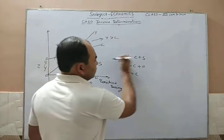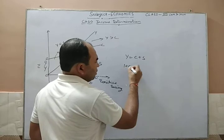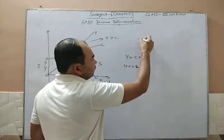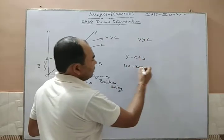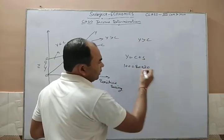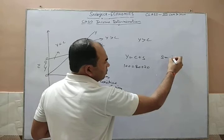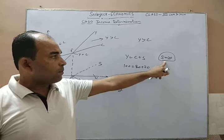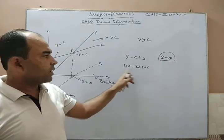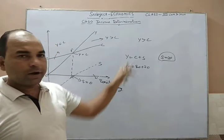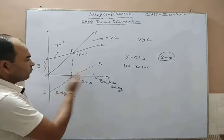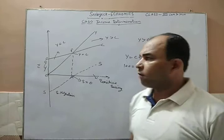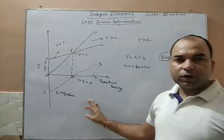For example, suppose Y is 100 and C is 80. Here Y is greater than C. Then S equals 100 minus 80 equals 20. So S is positive when Y is greater than C. This is the situation after the break-even point E. I hope students these concepts have been learned from the previous video.